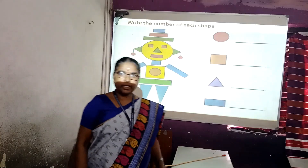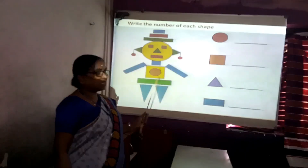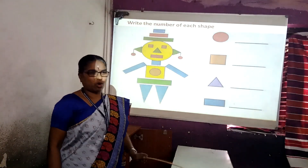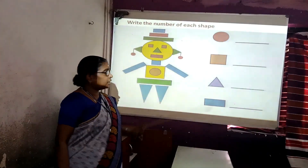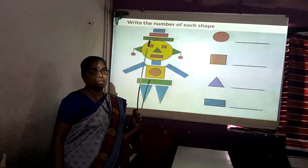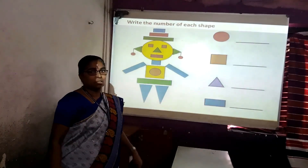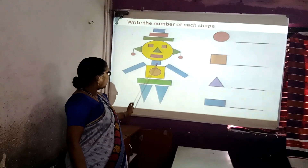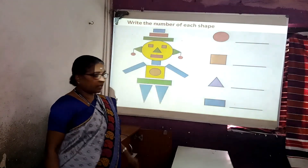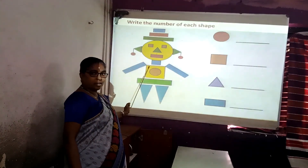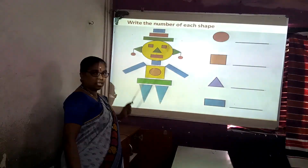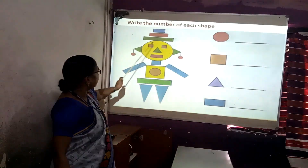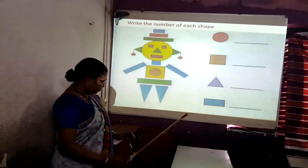Did you understand, children? Let us do one activity. Here one cartoon picture is given and the picture is made of shapes. Let us see — the body parts: the face part is a circle, the eyes are squares, the nose is a triangle, the mouth is a rectangle, both ears are triangles, the neck is a square, both hands are rectangles, the body is a square, and both legs are triangles. Let's count how many circles are there — one, two, three, four. Four circles are there.